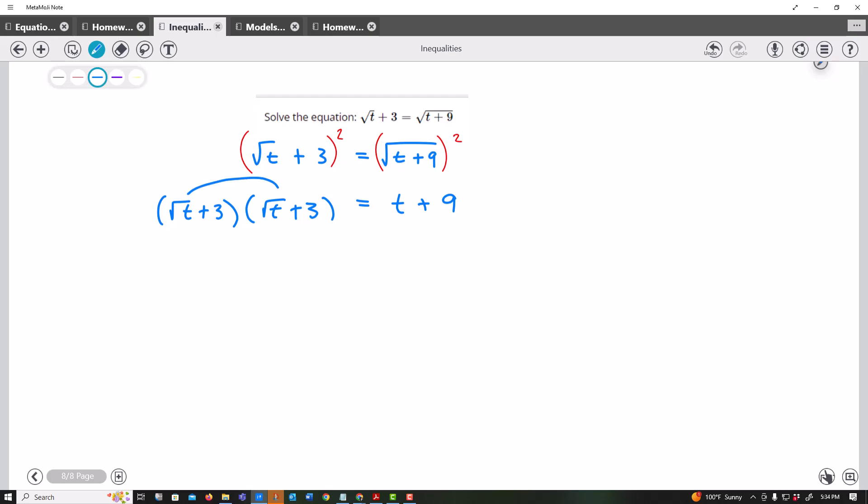When I multiply the square root of t by the square root of t, that's just t, or the square root of t squared, which is t. And then I multiply this, so that's plus 3 square roots of t, plus 3 square roots of t. I'm just foiling. And then plus 9 equals t plus 9.